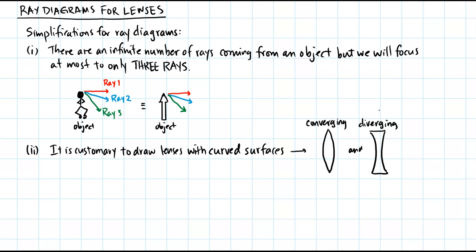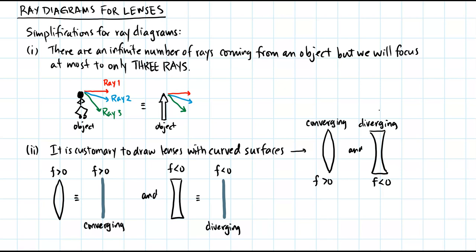It is customary to draw lenses with curved surfaces: converging lenses are thicker in the middle and diverging lenses are thinner in the middle. The focal length of a converging lens is positive and diverging is negative. Instead of drawing curved lenses, I will replace them with a straight line and explicitly label the focal length as greater than or less than zero. This simplifies ray diagram tracing considerably.